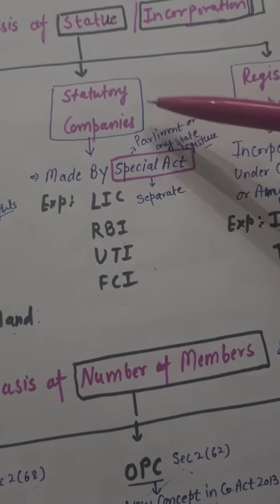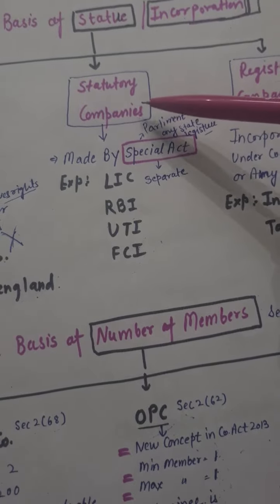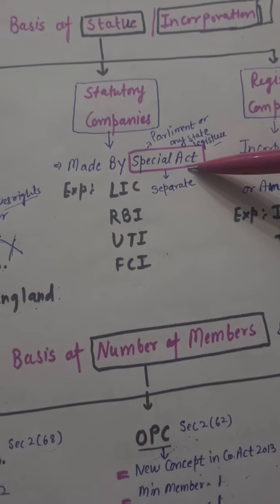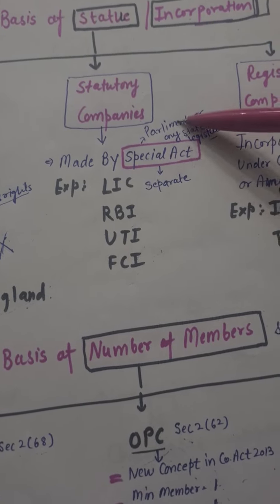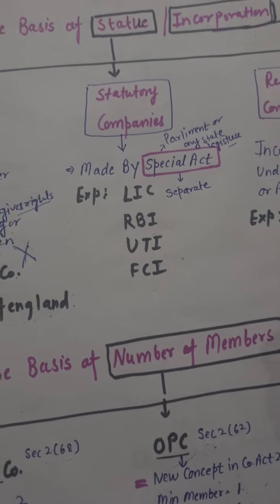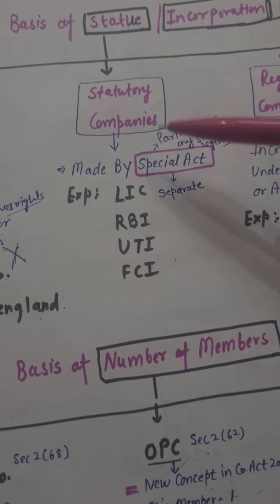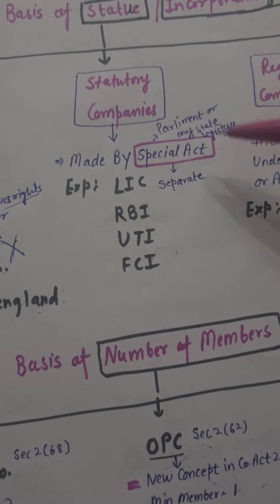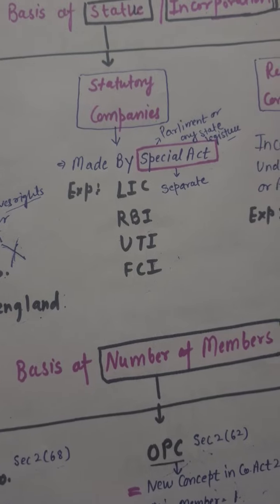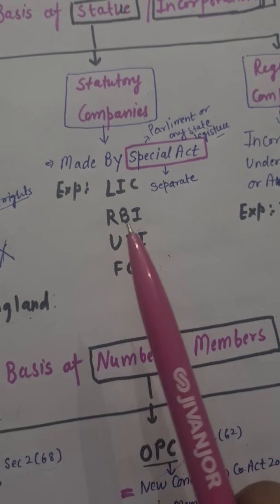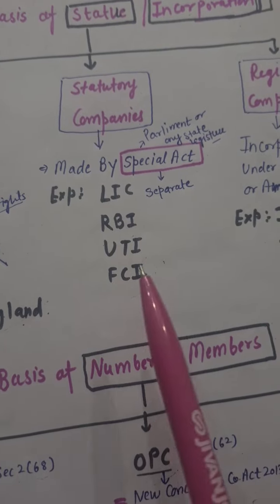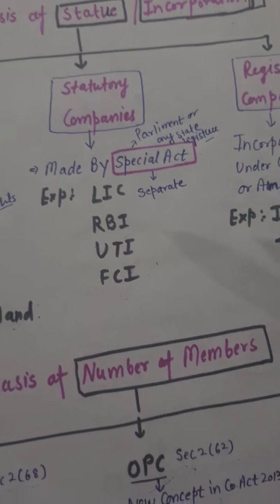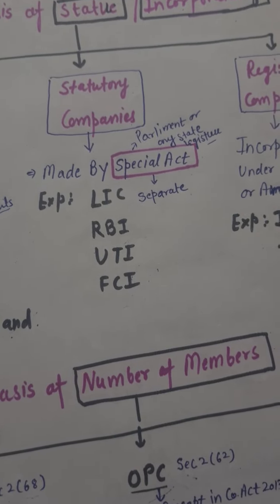What are statutory companies? Statutory companies are made by a Special Act, which is made by the Parliament or any State Legislature. For example, the Life Insurance Corporation Act, Reserve Bank of India, UTI, and Food Corporation of India — which are made by Special Act and are separate legal entities.